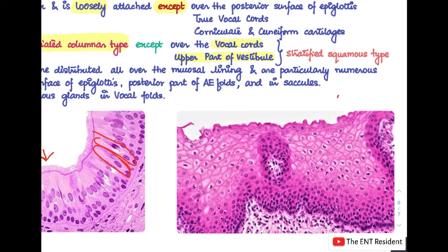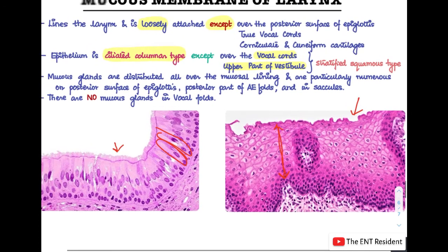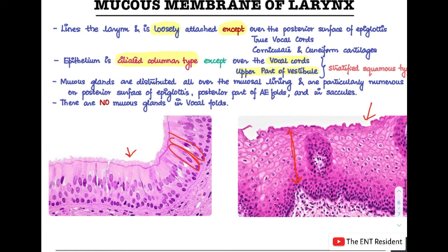The vocal cords and the upper part of the vestibule are lined by stratified squamous epithelium. Mucous glands are distributed all over the mucosal lining of the larynx but are particularly numerous on the posterior surface of the epiglottis, the posterior part of the AE folds, and in the saccules. Notably, there are absolutely no mucous glands in the vocal folds.